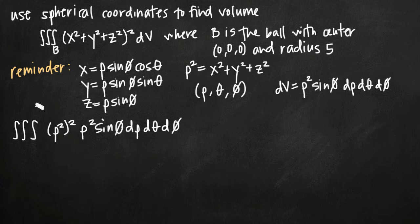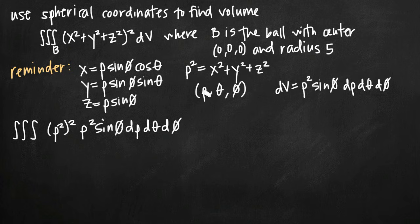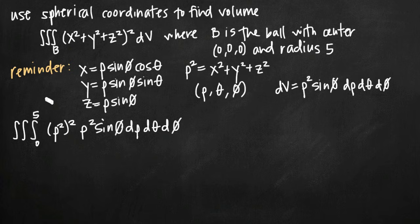Now we have the integrand and dV converted to spherical coordinates; we just need limits of integration. We're integrating first with respect to rho, and in spherical coordinates rho represents the distance from the origin to our coordinate point — essentially the length of the line segment from the origin to any point. Since B is the ball with center at the origin and radius 5, rho goes from 0 to 5.